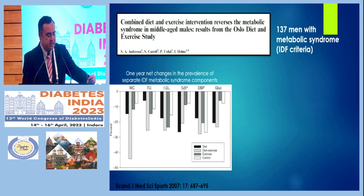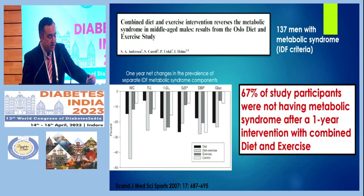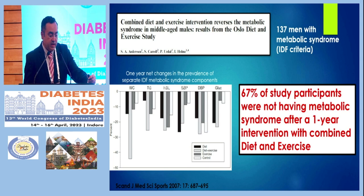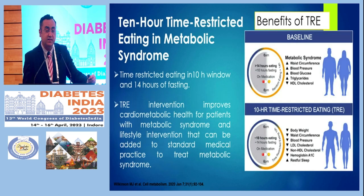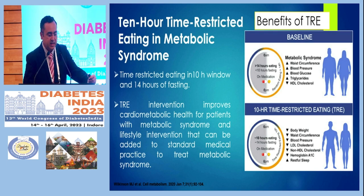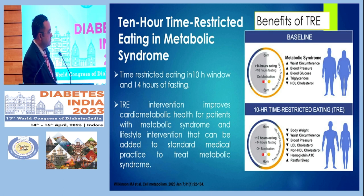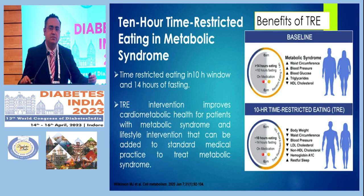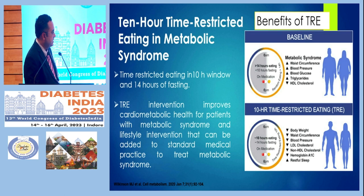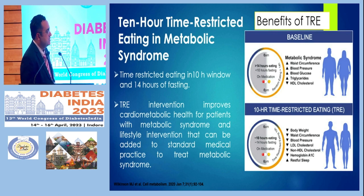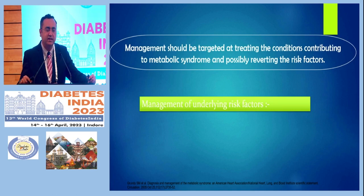We have strong evidence: the Oslo Diet and Exercise Study was a well-conducted study where combined diet and exercise intervention reversed Metabolic Syndrome. At the end of one year, more than 67% of study participants were free of Metabolic Syndrome. Similarly, there are many diet studies. A direct study with Metabolic Syndrome used time-restricted eating — patients ate within a 10-hour window with 14 hours of fasting — and all calorie-deficient diets work. Time-restricted eating improved cardio-metabolic health for patients with Metabolic Syndrome.